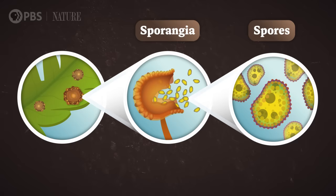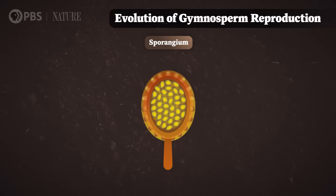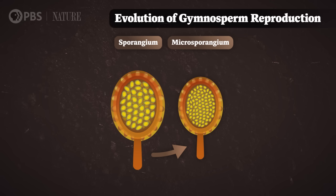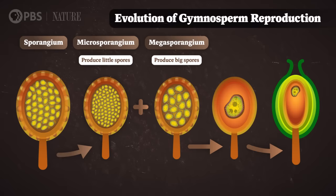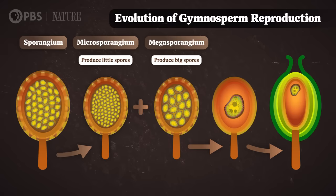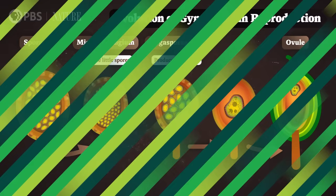Previously existing plants like ferns had produced spores — single cells crucial for the plant's reproduction — in special structures on the leaves called sporangia. Progymnosperms, which evolved about 390 million years ago preceding gymnosperms, still used spores to reproduce. But fossils show that progymnosperms started making two different types of sporangia. When they evolved into gymnosperms about 70 million years later, they specialized those two sporangia. One produced little spores, but the other produced one big spore protected by a layer of tissue called the seed coat. This structure — sporangium plus spore plus seed coat — is called an ovule, and when it matures, it becomes a seed.